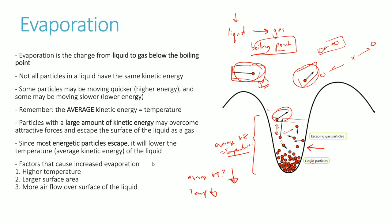Factors that increase the rate of evaporation include having a higher temperature, having a larger surface area so that more potential particles are at the surface and can escape, and an increased flow of air over the liquid surface to help with the concentration gradient.